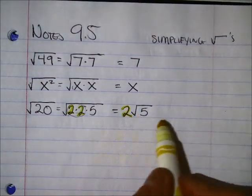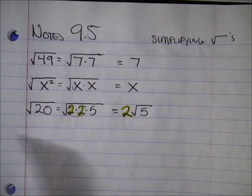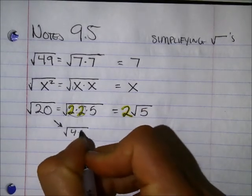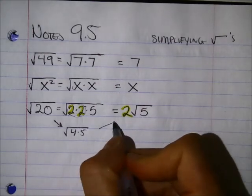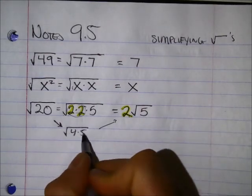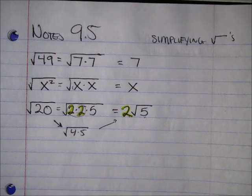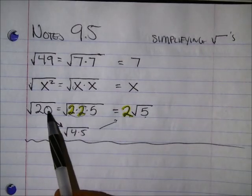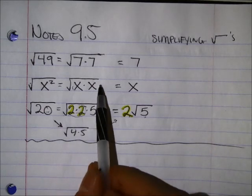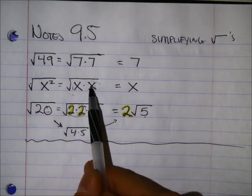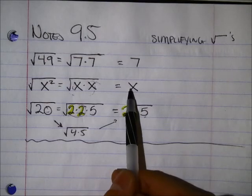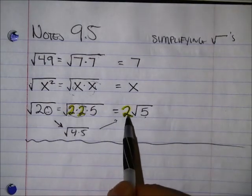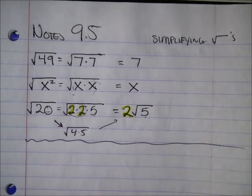These 2's can come out because there's a pair of them. The 5 stays on the inside. It's the same as breaking this up into the square root of 4 times 5. The square root of 4 is 2. The square root of 5 you don't know, so that's why it stays inside. If you see a pair of something, they come out of the square root as a single — two 7's come out as one 7, two 2's come out as one 2. The 5 doesn't have a pair so it stays inside.